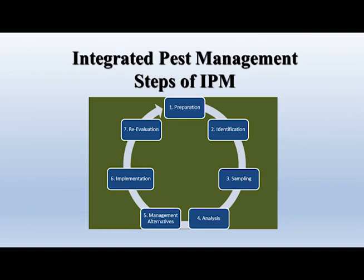There are steps to an Integrated Pest Management program, the first being preparation — making sure you have the right materials and knowledge to go into a field and perform these other steps. This could be an IPM guide, resources online, books, anything that's going to help you with that pest. Secondly, you need to properly identify the pest, as mismanagement often occurs when insects are misidentified.